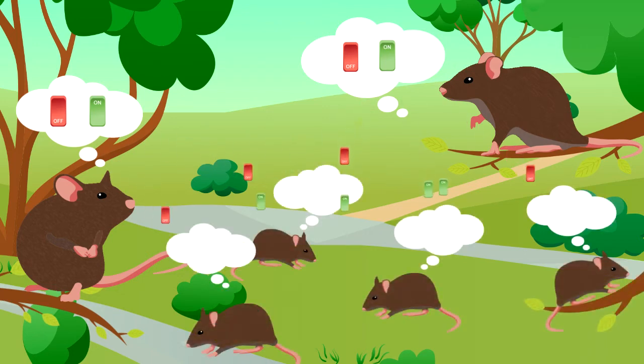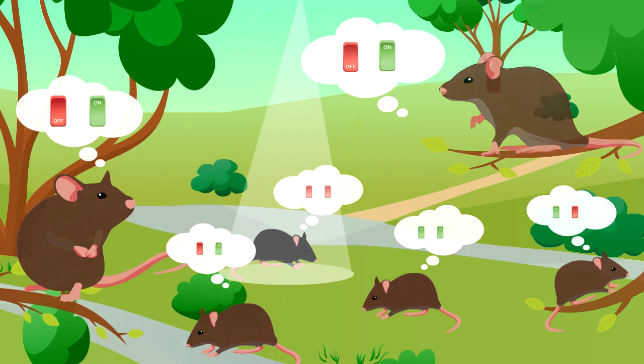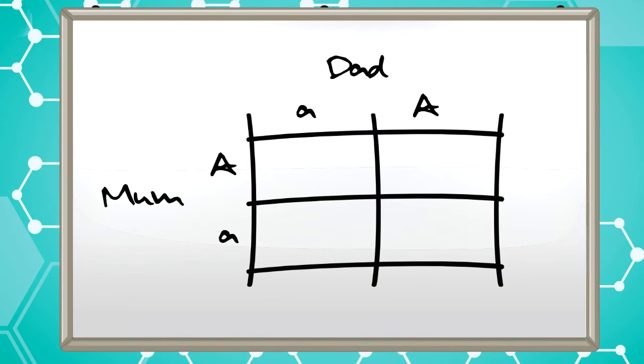So now both parents have a faulty gene they could give to their babies. 25% of Trevor's babies have both switches off. So what does this mean? We have some self babies. Let's use a punnet square again. So now we have a mix of outcomes.